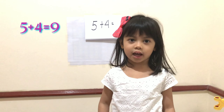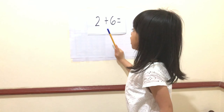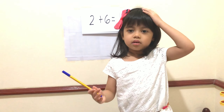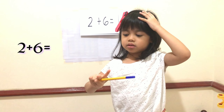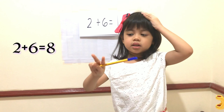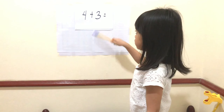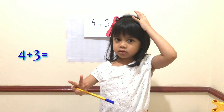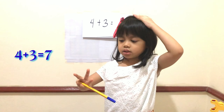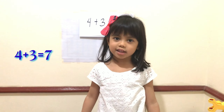So the answer is 9. Next we have 6 plus 2. 6 in the head plus 2. 6, 7, 8. So the answer is 8. Next question is 4 plus 3. 4 on the head plus 3. 4, 5, 6, 7. So the answer is 7.